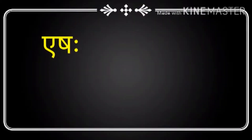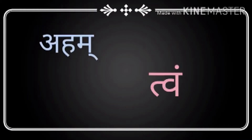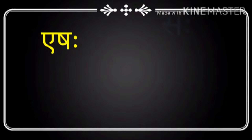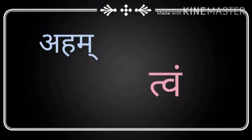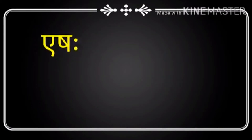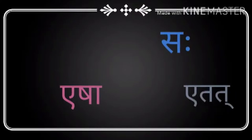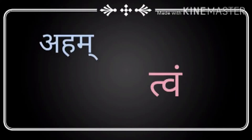Good morning students, welcome to Class 8 Sanskrit. Before going to the chapters, we have to revise some Class 7 basics. There are three types of genders in Sanskrit: the first one is Pulling, which means masculine noun; the second one is Strilinga, which means feminine noun; the third one is Napunsakalinga, which means neuter noun.